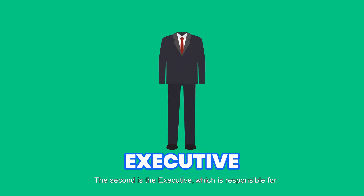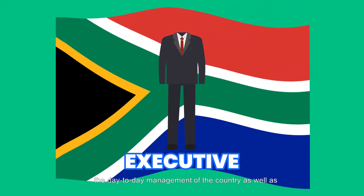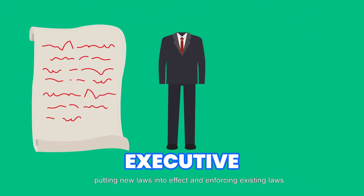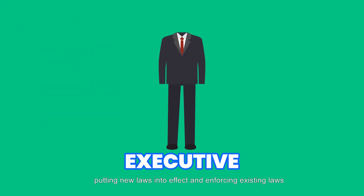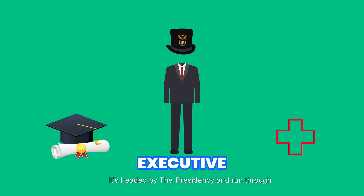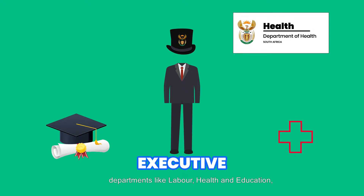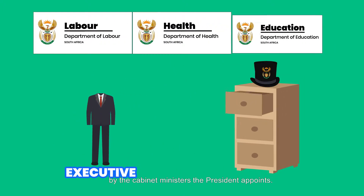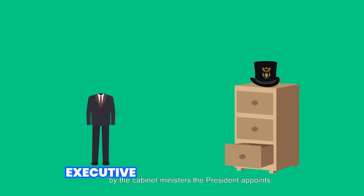The second is the executive, which is responsible for the day-to-day management of the country, as well as putting new laws into effect and enforcing existing laws like access to basic healthcare and education. It's headed by the presidency and run through departments like labour, health and education, by the cabinet ministers the president appoints.